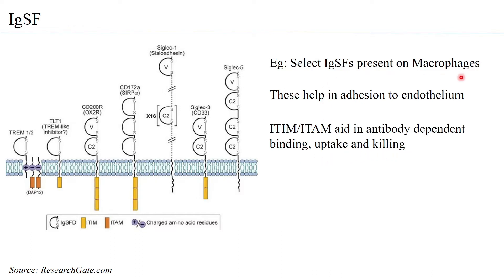Macrophages can, through the ITAMs, recognize and bind to the antibody Fc region, then take up the antigen. This is receptor-mediated endocytosis — since macrophages are phagocytes they can take it up and then kill the antigens through the phagolysosome.